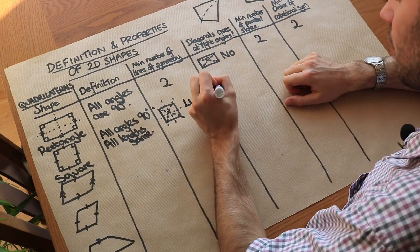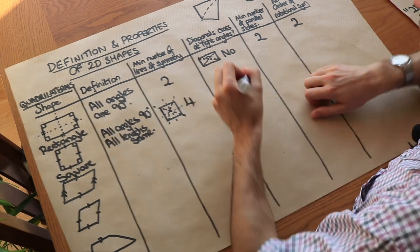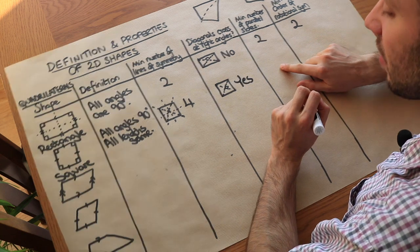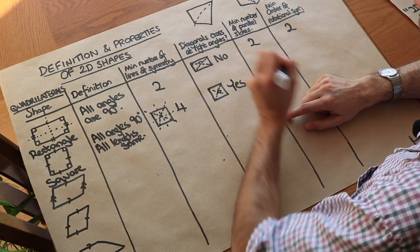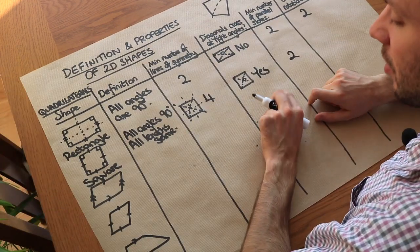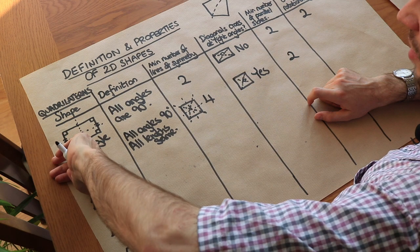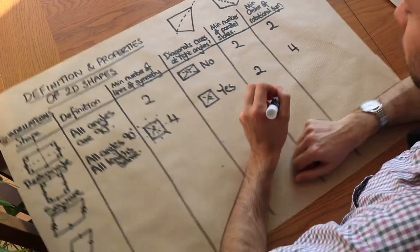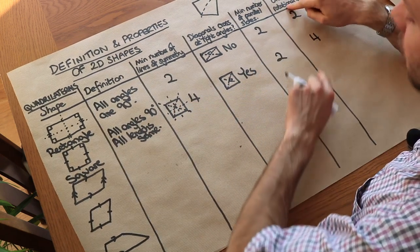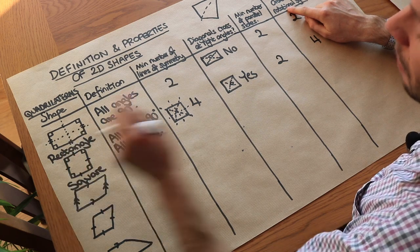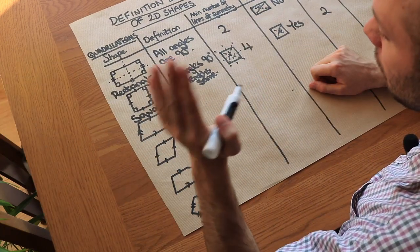For a square, the diagonals connect opposite corners and the angle between them is a right angle, so yes, the diagonals cross at right angles. It has two pairs of parallel sides. Its rotational symmetry is order four, since rotating 90 degrees each time always gives the same square. In general, a regular polygon's order of rotational symmetry equals its number of sides, so a regular four-sided polygon has order four.